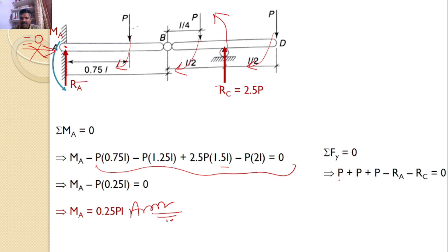Hence, I can write P plus P plus P minus Ra minus Rc is equal to 0, or 3P is equal to Ra plus, and I know Rc is equal to 2.5P. From this equation, I can find the value Ra that is equal to 0.5P, is another answer for the given problem.